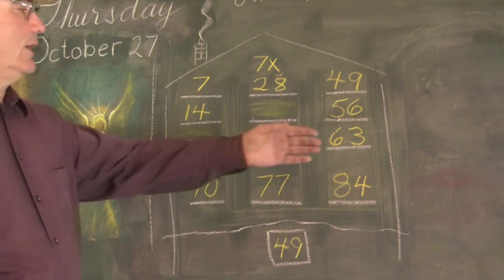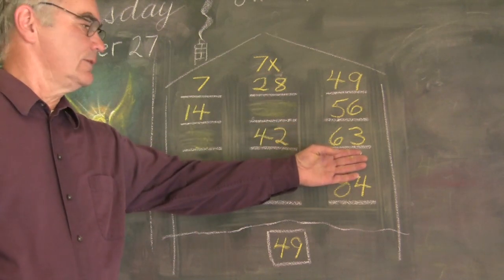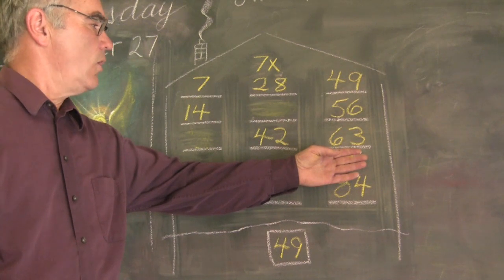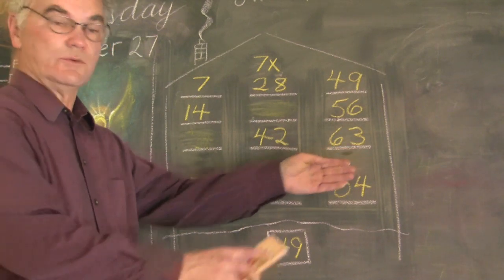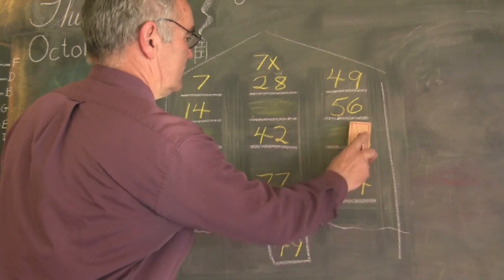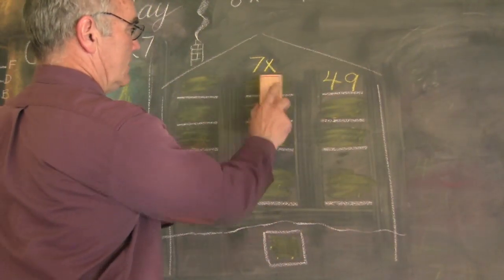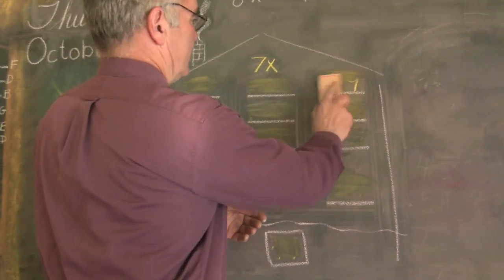Then we jump around and we say, what's this one? 7 times 9 times, what's that? Oh, 7 times 9 is 63. Goodbye 63. Leaving the 4 and the 7 until the end. Goodbye 28. 49. 7 times 7 is 49.